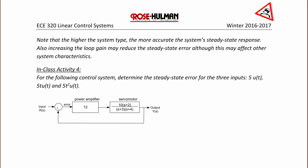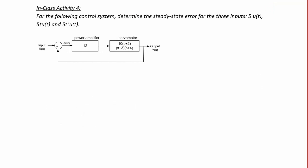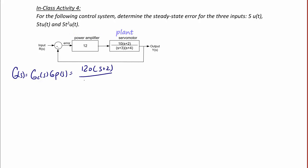In-class activity 4: For the following control system, determine the steady-state error for the three inputs — 5·u(t), 5t·u(t), and 5t²·u(t). This is a unity feedback system where the controller is a power amplifier with a transfer function of 12, and the plant is a servo motor with a transfer function of 10(S+2) over (S+3)(S+4). So G(S) equals GC(S)·GP(S), which is 120(S+2) over (S+3)(S+4).